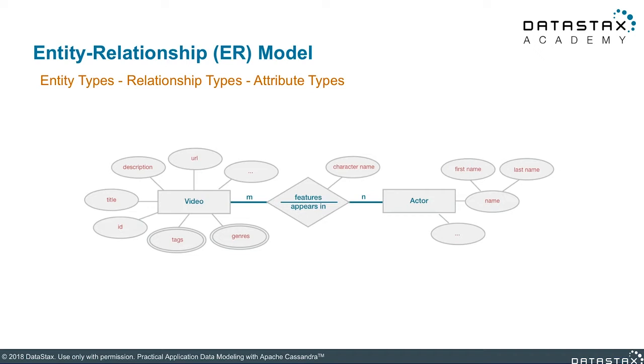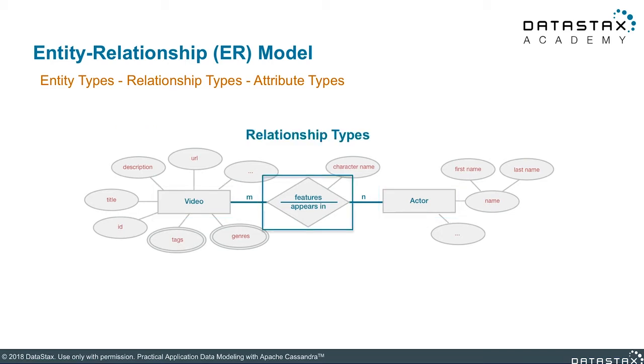First, you need to identify all of your entity types. In this example, we have a video and an actor — killer video has videos and killer video has actors. In between these two objects, we have a relationship type. If you read the relationship from left to right, read the word on the top. If you read from right to left, read the phrase on the bottom. In this case: video features actor, or read the other way, actor is featured by video. For example, Pirates of the Caribbean featured Johnny Depp. Or from right to left: Johnny Depp appeared in Pirates of the Caribbean. Every time two objects participate in a relationship type, we call that an instance of the relationship.